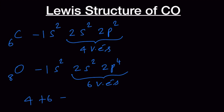Together, 4 plus 6, we have 10 valence electrons in carbon monoxide. Let's draw the Lewis structure now. Carbon has 4 valence electrons, so let's put those 4 electrons around carbon. Then for oxygen, we have 6 valence electrons: 1, 2, 3, 4, 5, 6. Now let's check for the octet configuration.